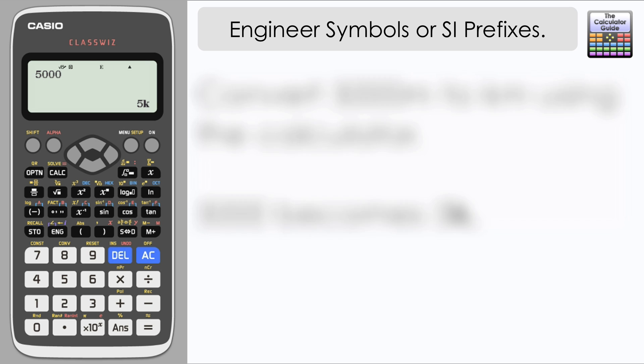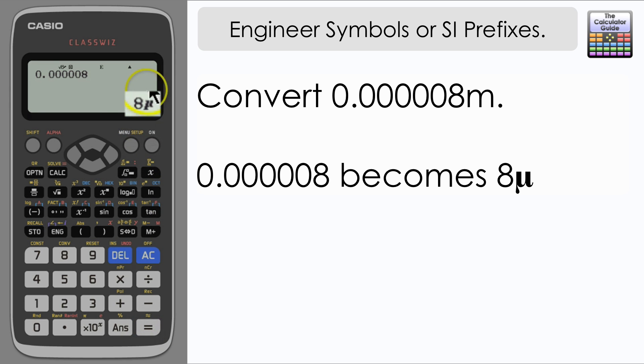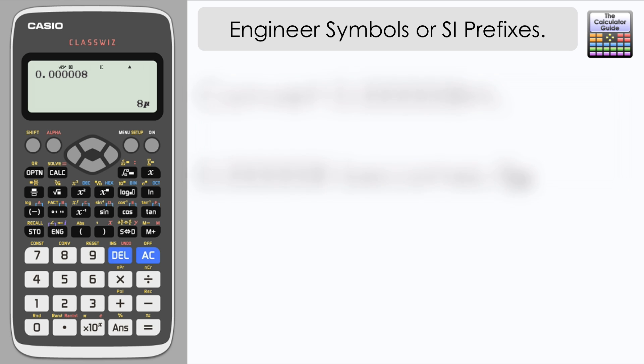Let's try another example. Let's try 0.00008, and if we input that we can see that we've got 8 and then a mu, which is the SI symbol for micro. So if it was that value of a meter, then we would have 8 micrometers as our measurement.